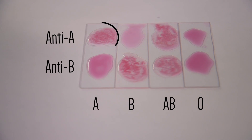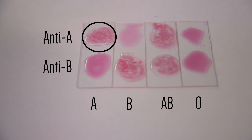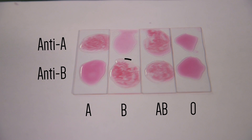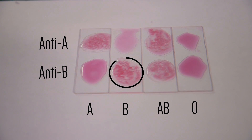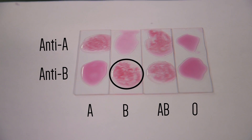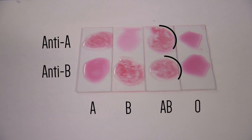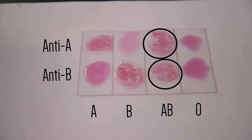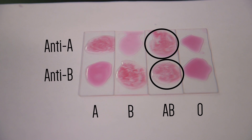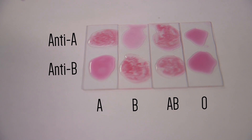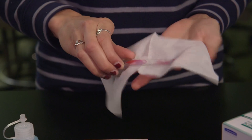Now let's take a look at the possible results that you may observe. For blood type A, we would see the blood agglutinate with the anti-A serum. Blood type B would agglutinate with the anti-B serum. It stands to reason that blood type AB would agglutinate with both serums, and that blood type O would not agglutinate with either one.